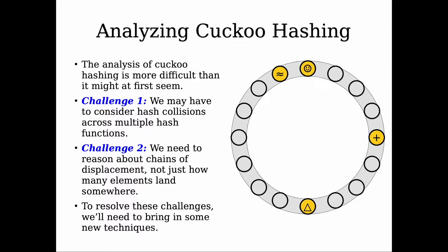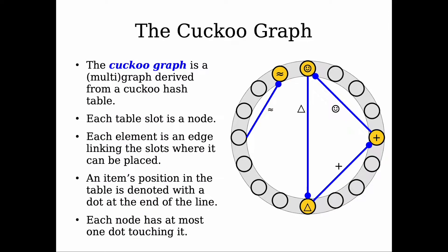To address these two challenges, we need the concept of the cuckoo graph. The cuckoo graph is a corresponding graph obtained from a given hash table. For this graph, each slot in the table is a node in the graph—those circles. And an element in the hash table is an edge connecting the two possible slots, or where element x can be placed. We have a dot to denote where the item is placed.